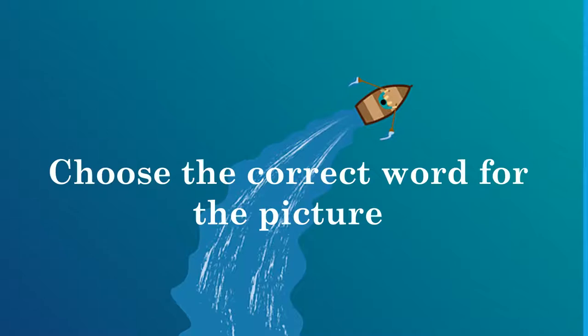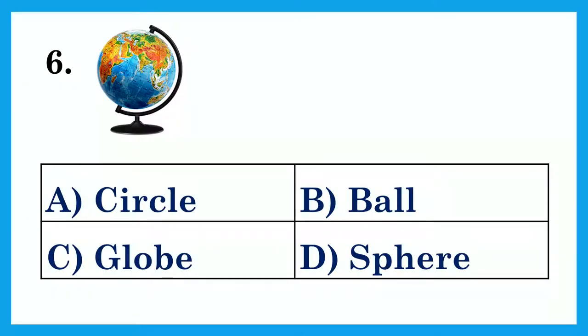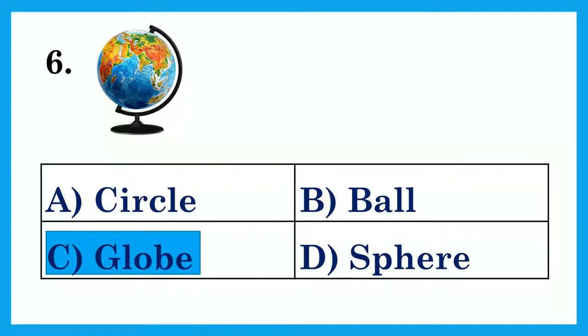Choose the correct word for the picture. Look at the picture shown on the screen and choose the correct word. Option A: Circle. Option B: Ball. Option C: Globe. Option D: Spear. The answer is Option C: Globe.